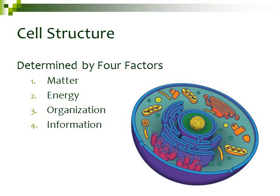Cell structure is determined by four factors. The first is matter — anything that takes up space and has mass is considered to be matter, and this matter is made up of atoms. There are different types of atoms called elements, which we learned about in chapters 2 and 3 when we talked about chemistry. The second factor is energy. All living cells need energy; they either have to produce their own energy or get it from some outside source.